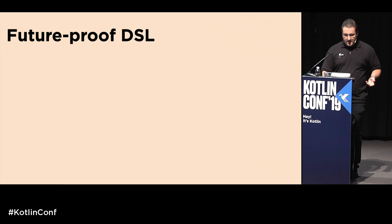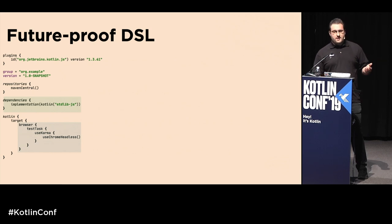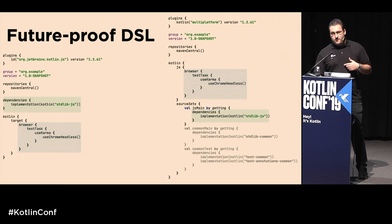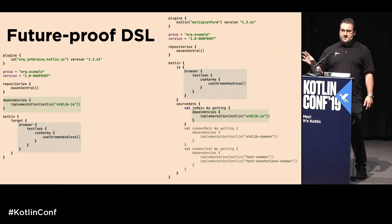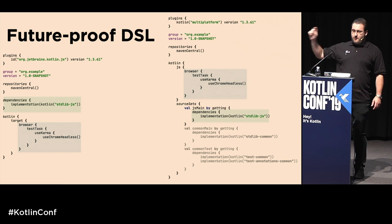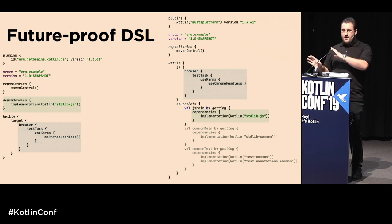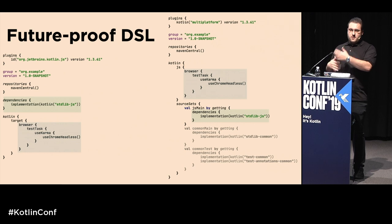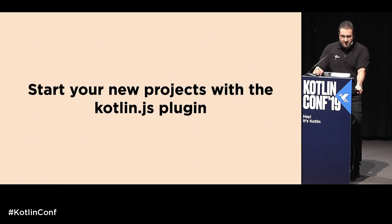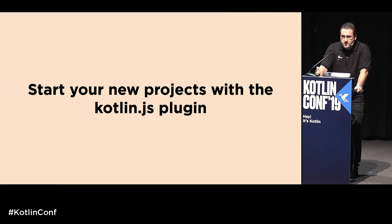On the left we have a Gradle build script for a browser application using the Kotlin.js plugin, and on the right the Multiplatform version. You don't need to read all the code — just see that the green part corresponds to the green part, and the blue to the blue. All the JavaScript-specific stuff you can copy over and it works in the other context as well. The message is clear: start with the new Kotlin.js plugin.